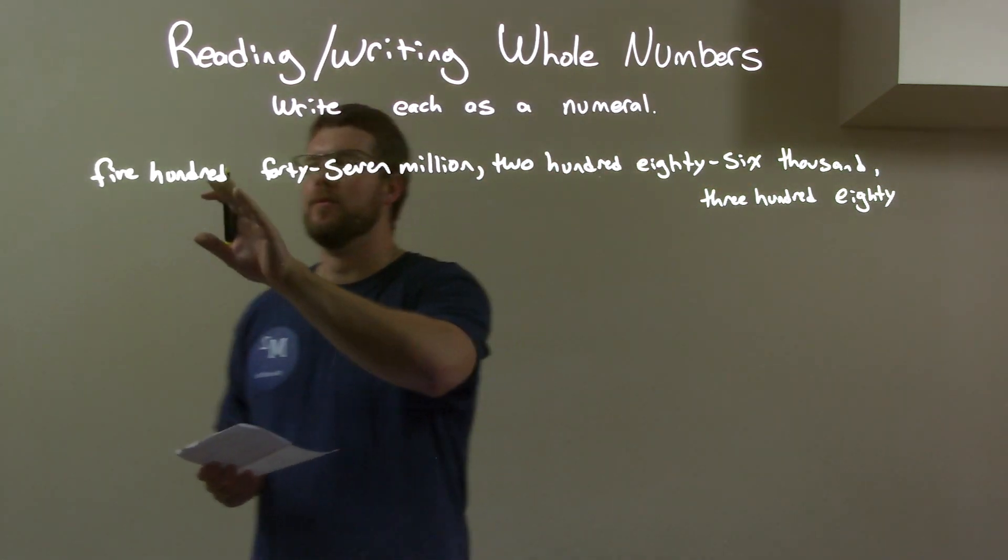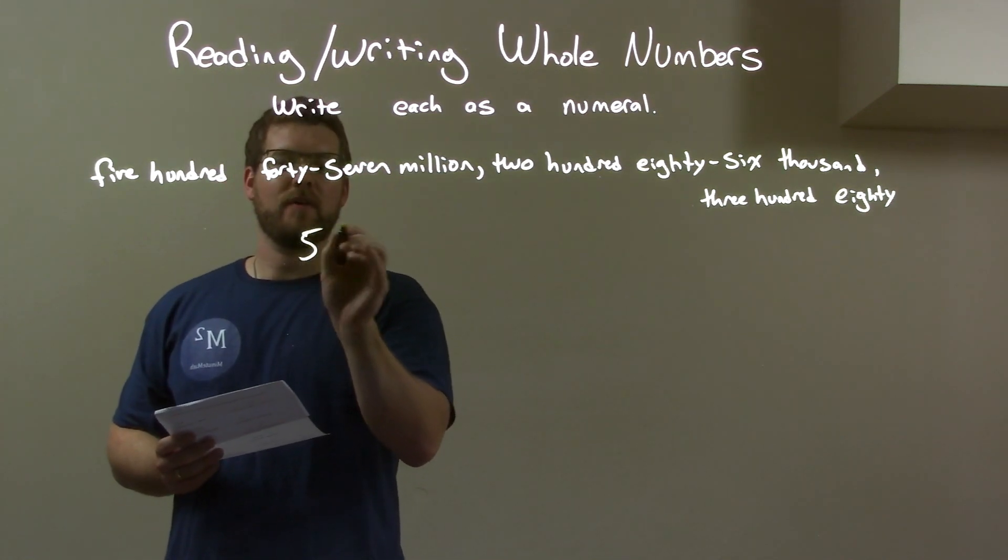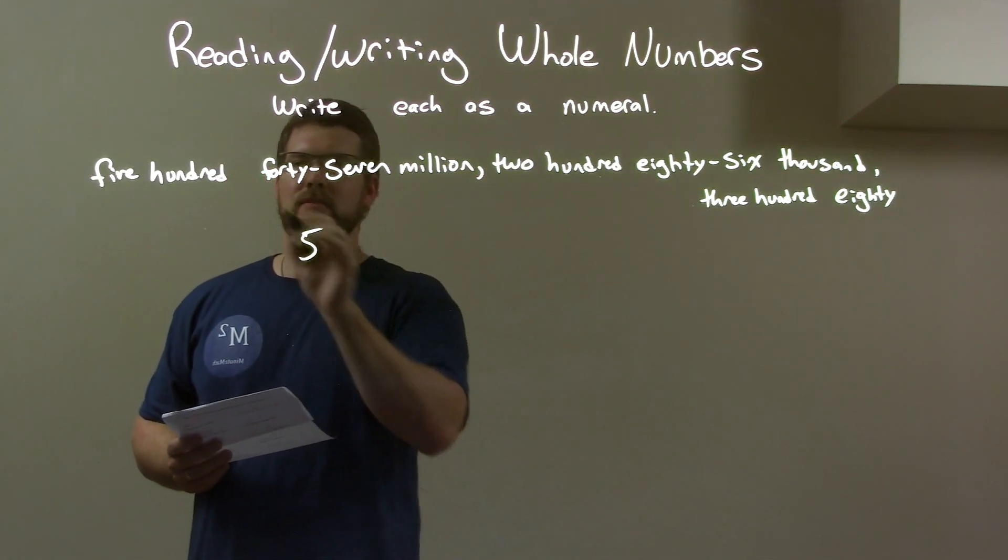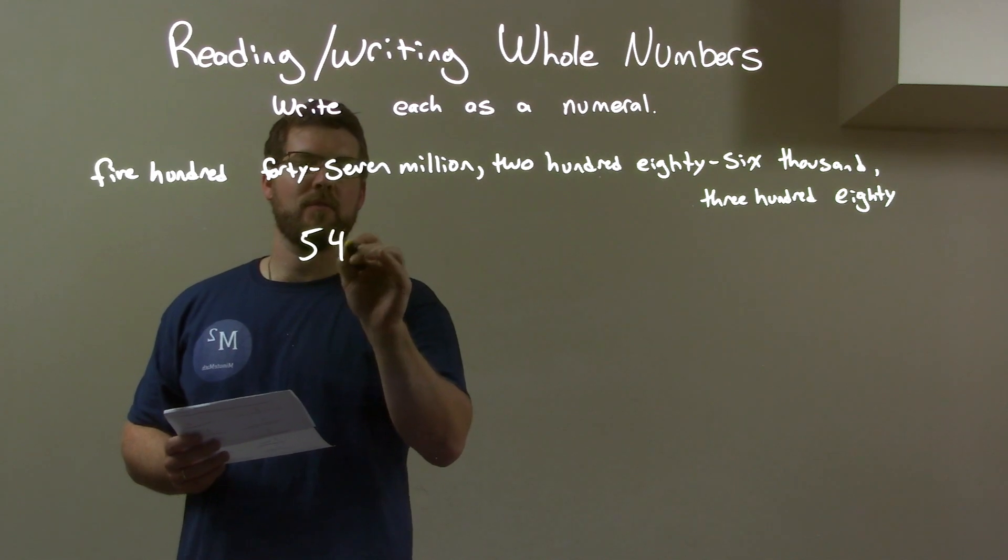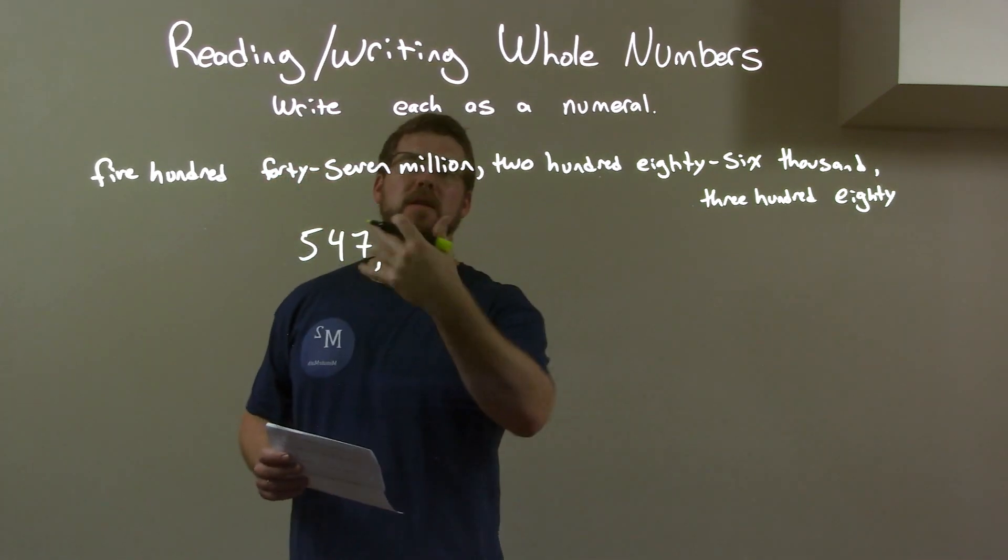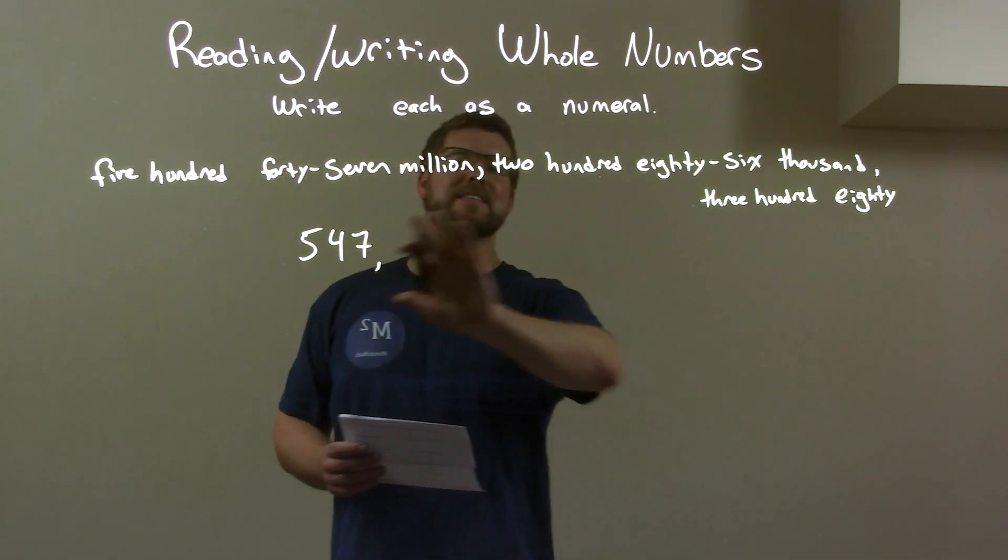Okay. First thing we do: we have five hundred forty-seven. That's in the millions right here. So that means there are going to be six places afterwards.